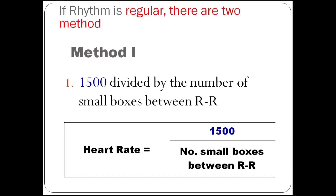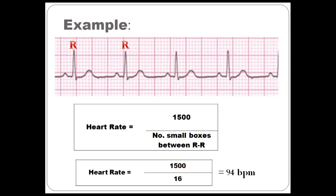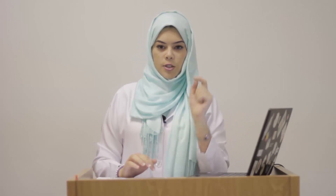How do you measure the rate if the rhythm is regular? You have two methods. The first is dividing 1,500 by the number of small boxes between two separate R's. In this example, you've got 16 small boxes, so 1,500 divided by 16 is 94 beats per minute. If you've got large boxes, you divide 300 by the number of large boxes between the R's — for example, 300 by 3 gives 100, and by 4 gives 75.